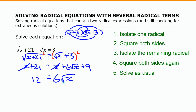Since they're both single terms and one has a factor of 6, I'll divide both sides by 6, giving me square root of x equals 2. Then I square both sides again, and I get x equals 4.